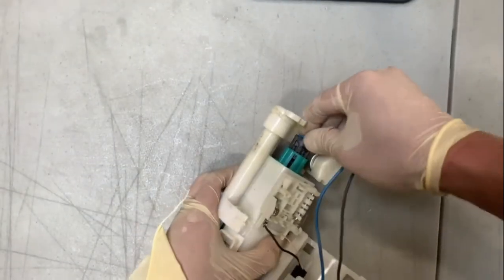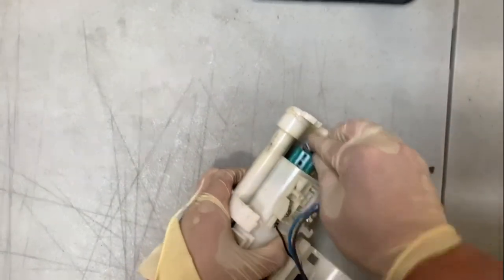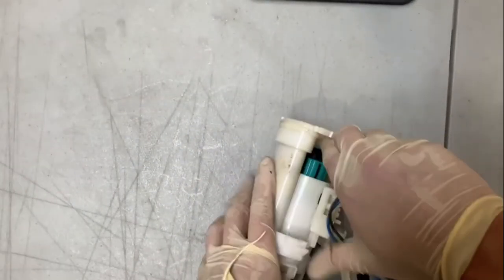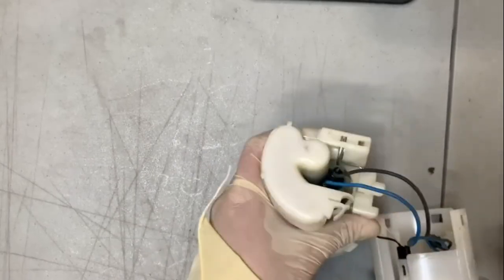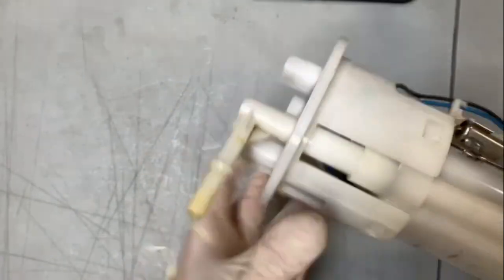Connect the harness to the fuel pump. Finally, just clip back on the bottom holder of the fuel pump. And there you go. That's it.